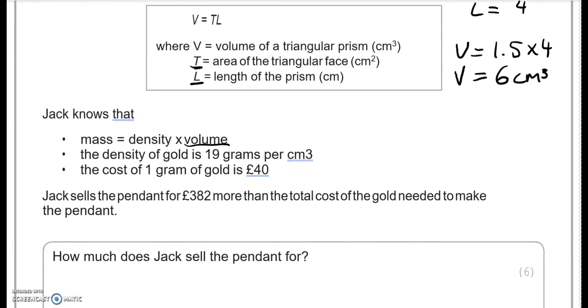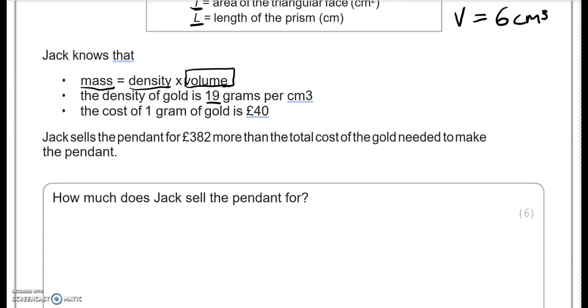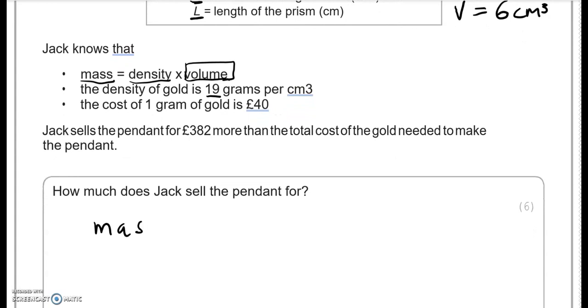Now we've got to work out the mass. So mass is equal to density times volume. We've got volume already. The density we are being given is 19 grams per cubic centimeter. The cost of 1 gram of gold is 40. So we're going to work out the mass because we don't know the mass. So mass, the density is 19 times the volume which is 6, 114 grams because we input grams in here. 1 gram costs 40 pounds. So we've got 114 grams times 40. That is 4,560 pounds.